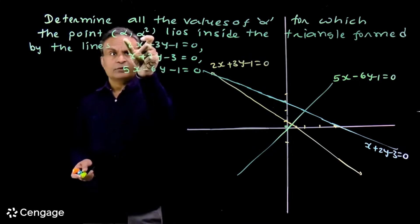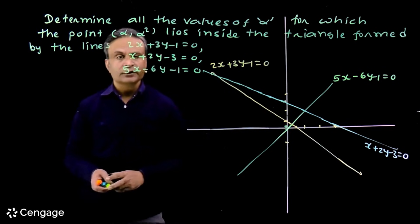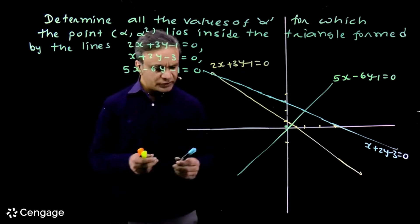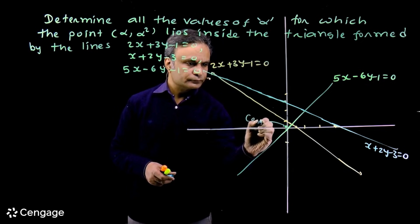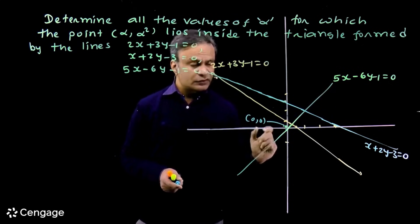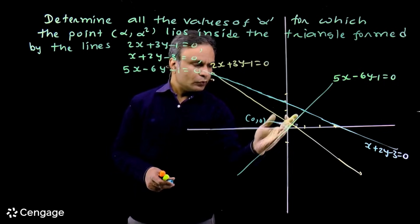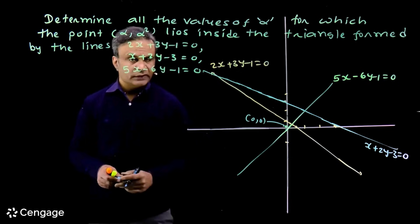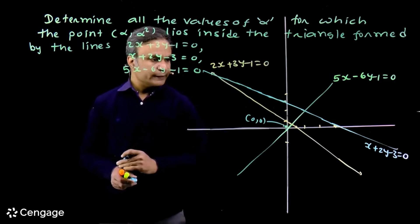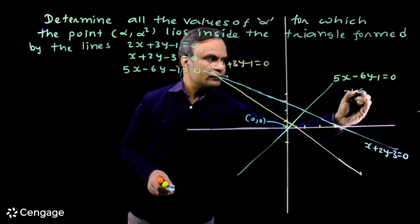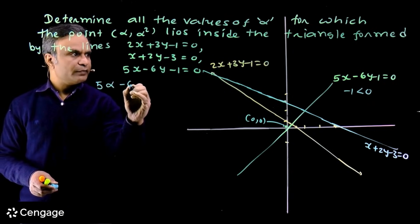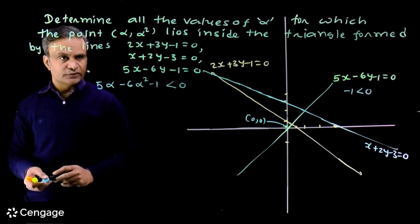We have to find the values of alpha for which the point (alpha, alpha squared) lies inside this triangle. The simplest method is to consider the origin as a reference point. Taking the green line, 5x minus 6y minus 1 equals 0, the origin and the interior point lie on the same side. With respect to the origin the sign is negative, so we must have 5α minus 6α² minus 1 less than 0. This is the first condition.